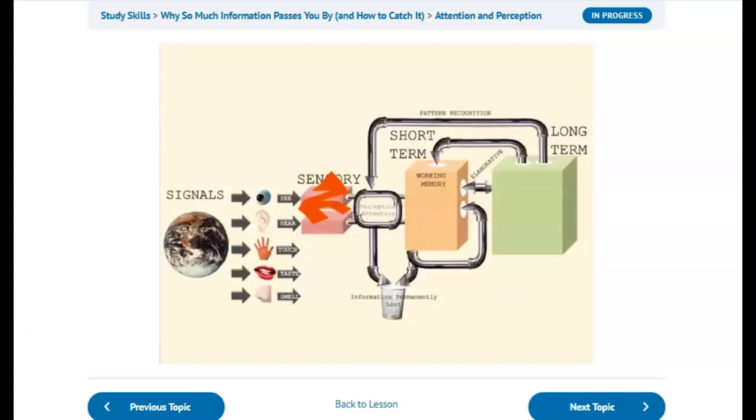Perception works by matching signals to patterns stored in long-term memory. If a pattern exists, then you interpret the signal. You make sense of it. It has meaning for you and you move it to short-term memory. If no pattern exists in long-term memory, then the signal is usually lost.